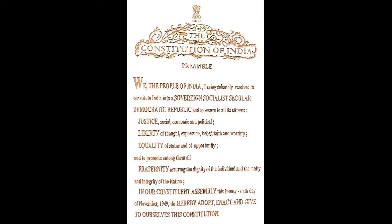The Constitution of India Preamble: We, the people of India, having solemnly resolved to constitute India into a sovereign, socialist, secular, democratic republic and to secure to all its citizens Justice — social, economic and political — Liberty of thought, expression, belief, faith and worship, Equality of status and of opportunity, and to promote among them all fraternity, assuring the dignity of the individual and the unity and integrity of the nation. In our Constituent Assembly, this 26th day of November 1949, do hereby adopt, enact and give to ourselves this Constitution.